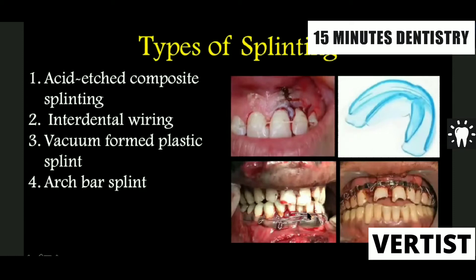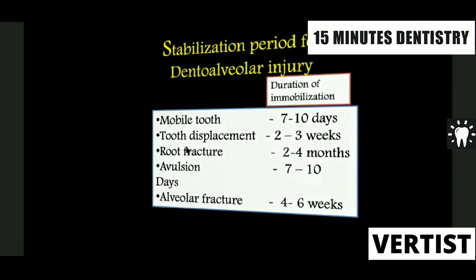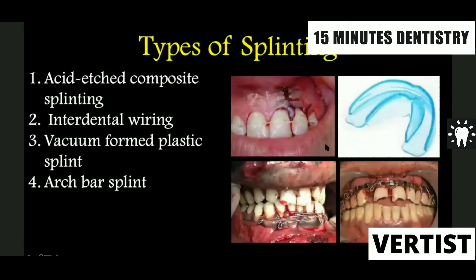This depends on how much it is acceptable to the patient, because sometimes a patient who is a public figure may not accept arch bars. So we can use something called acid-etch composite splinting, which is rigid enough but not too conspicuous. It gives you reasonably good results. Otherwise, the best way of having a proper dentoalveolar fracture reduced and immobilized is with an arch bar.